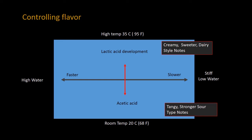Let's talk about controlling flavor. As you move up in temperature, more lactic acid is developed. Lactic acid gives you more of those creamier, sweeter, dairy-styled notes — almost fruity. As you start going into cooler temperatures, you produce more acetic acid. So if you're making your starter in a warmer environment, you're going to get more of those sweeter dairy-style notes. In a cooler environment, you get more of those tangy, stronger, sour-type notes. This is the reason why many people do a final proof inside the refrigerator — they're really looking to get that real nice tang out of their sourdough.